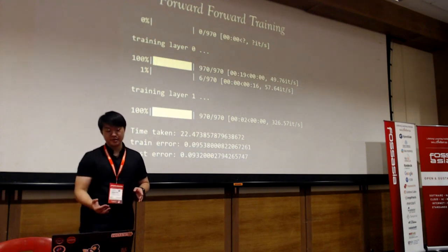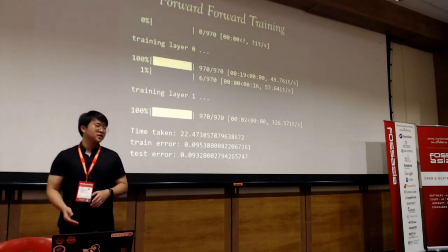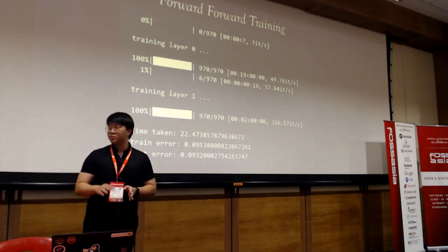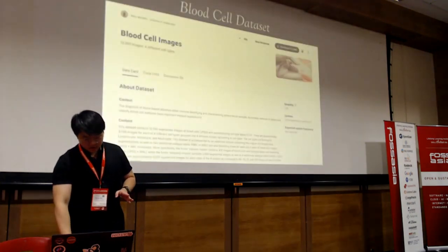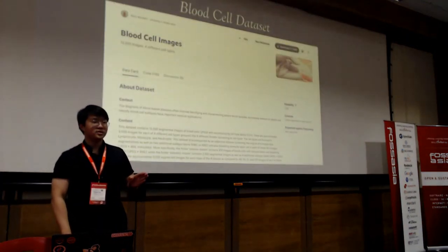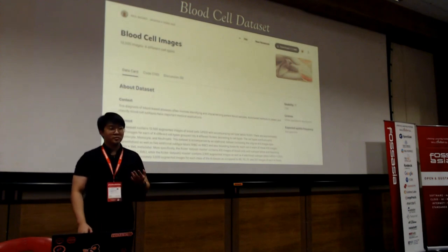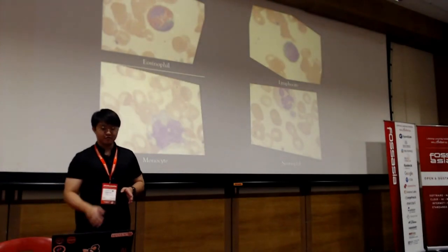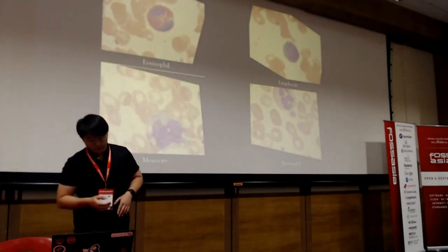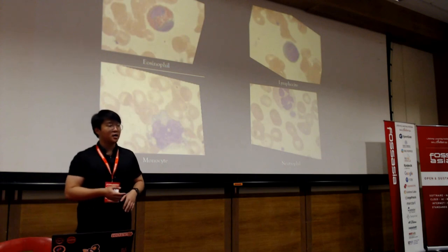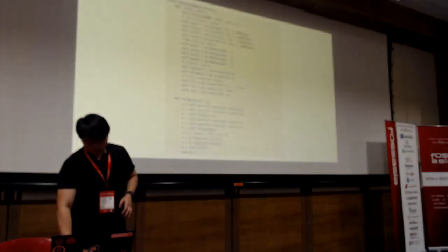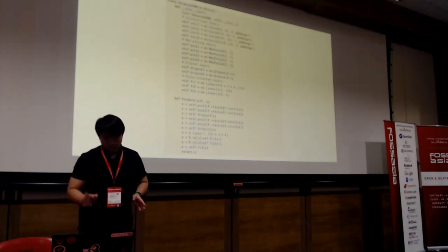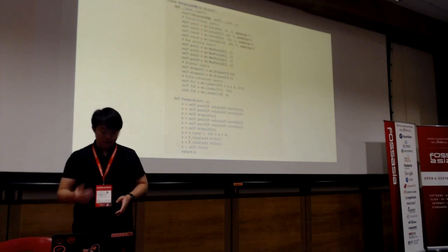On MNIST, Forward-Forward runs in about 22.4 seconds — not a big difference — with a train error and test error of 0.09. That's not bad at all. We also tested on a blood cell dataset containing four types of white blood cells: eosinophil, lymphocyte, monocyte, and neutrophil.